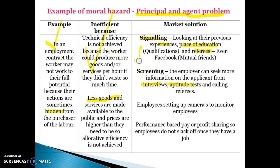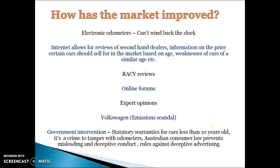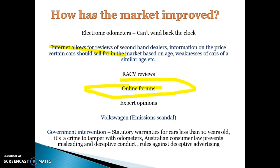The difference between signalling and screening: anything the employer seeks out themselves — contacting mutual friends, contacting referees — is screening. The person providing their referees is signalling. Setting up cameras to monitor employees and paying them based on performance so their interests are constantly aligned with the organisation are also examples. In terms of how the market has improved, there's a range of things: the internet allows you to review second-hand car dealers, online forums help people communicate about the quality of different organisations, and expert opinions are also available.